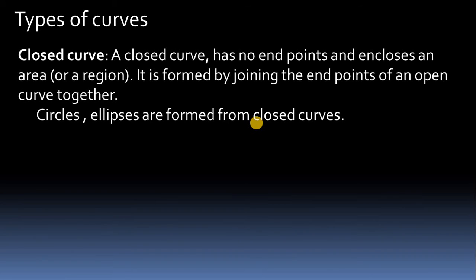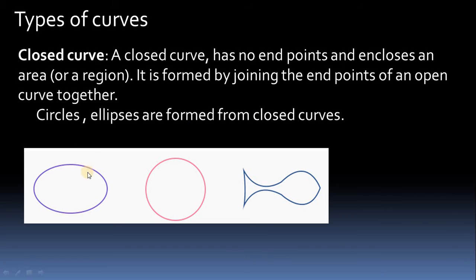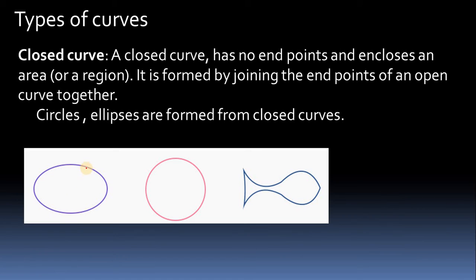Close curve: whatever the start point is there, that is also the ending point. A close curve has no end point and encloses the area. It is formed by joining the end points of an open curve together — when you draw the curve, that point itself is both the starting and ending point, and it will be closed.